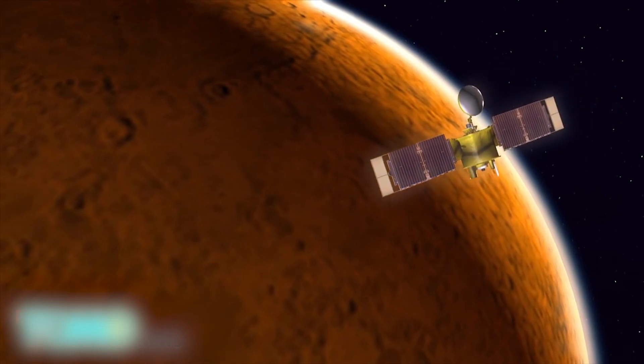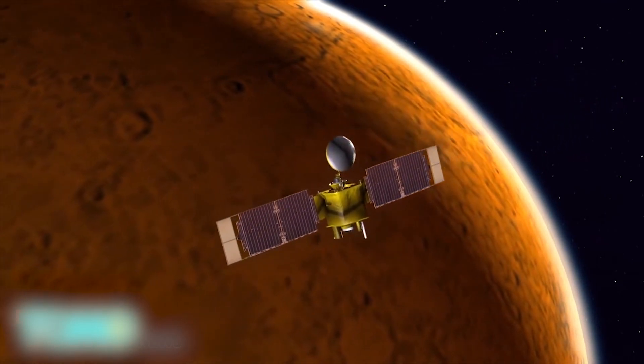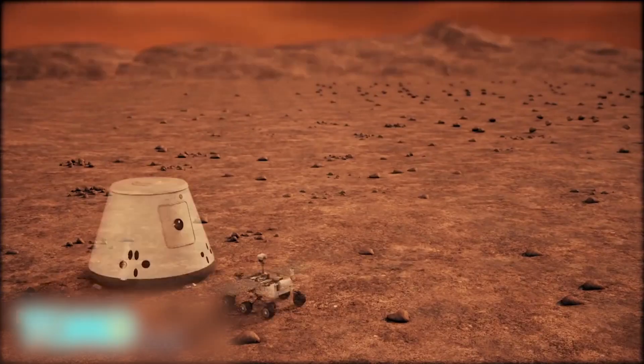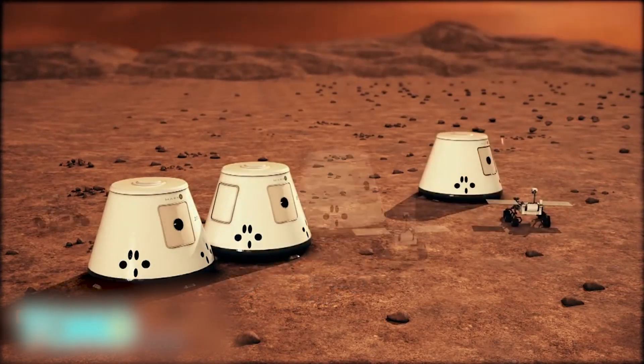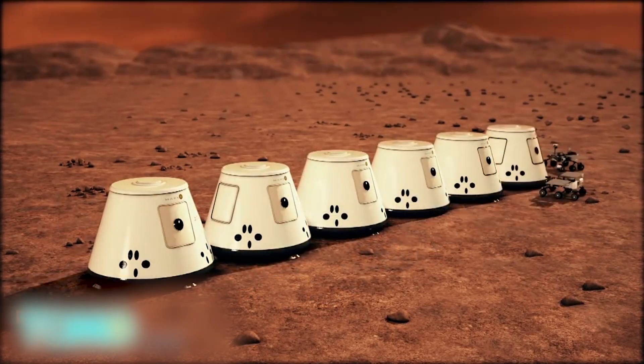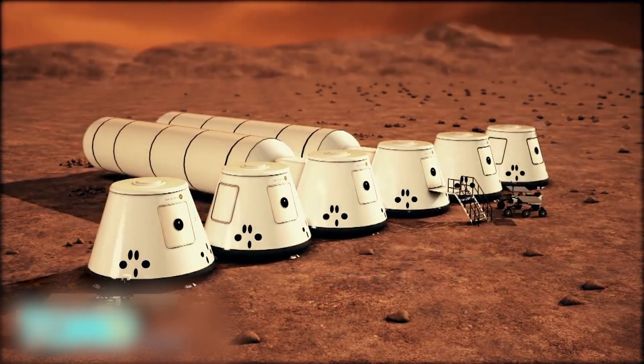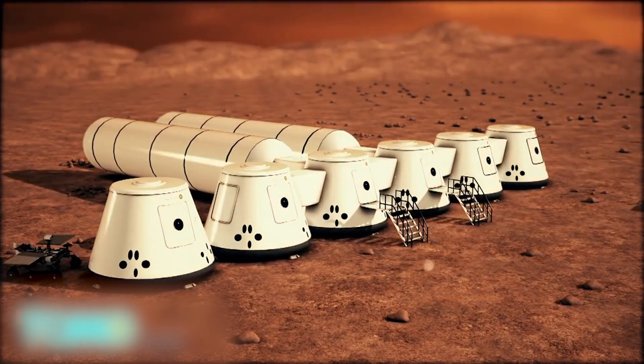In 2020, Mars One will launch a communications satellite to the red planet. Between 2022 and 2025, a series of rovers will land and assemble livable habitats, which include a life support unit and a communication system.